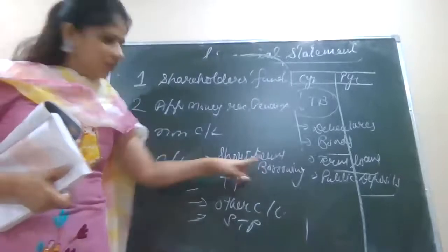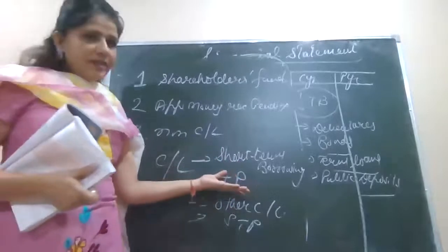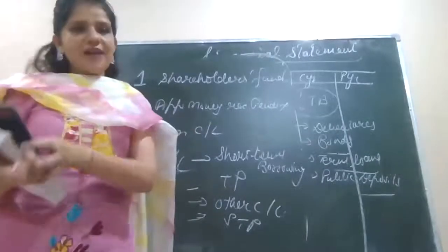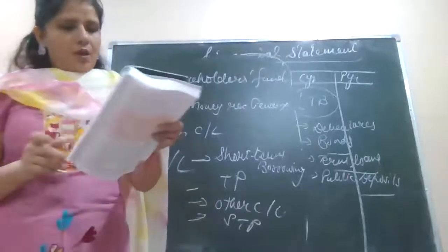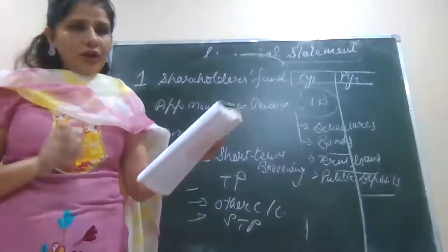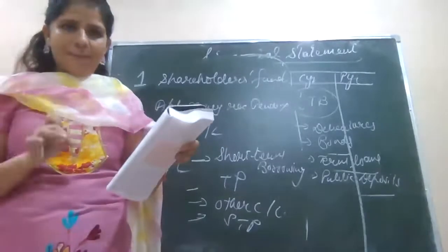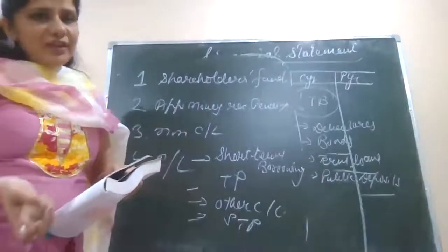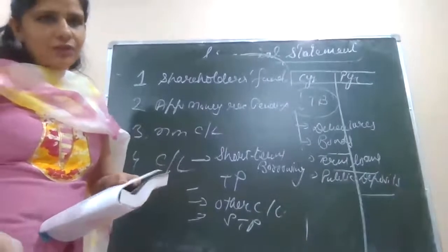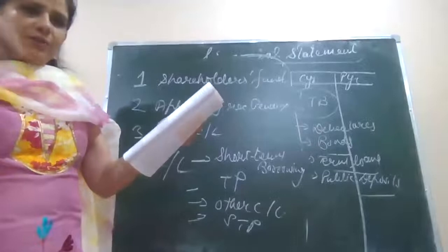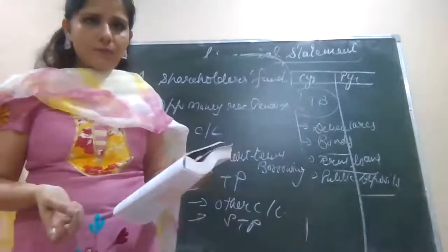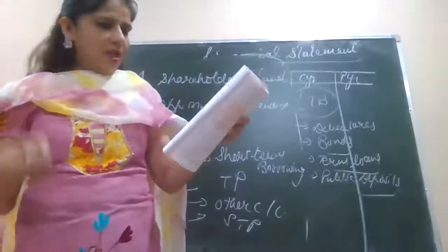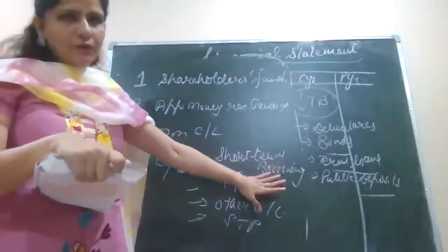Under short-term borrowing, reading from page number 1.22: loans repayable on demand, bank overdraft, cash credit from banks, loans from other parties or financial institutions repayable within 12 months, deposits you have taken that will be repaid within 12 months, and other loans and advances. This is the detail of your short-term borrowing that you need to learn.